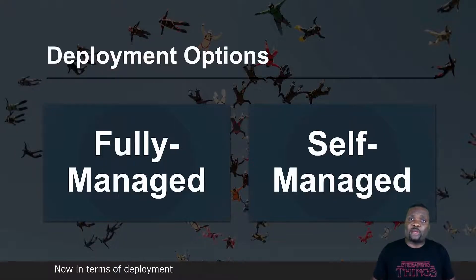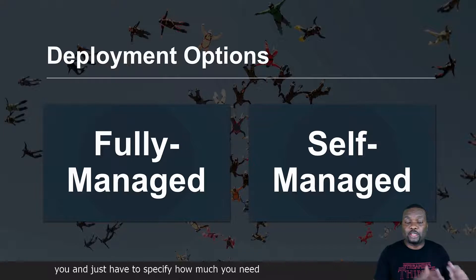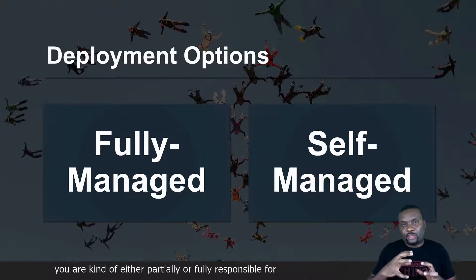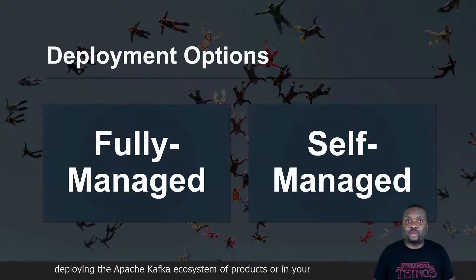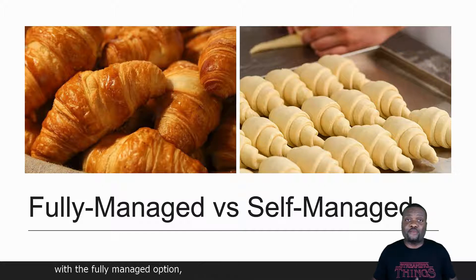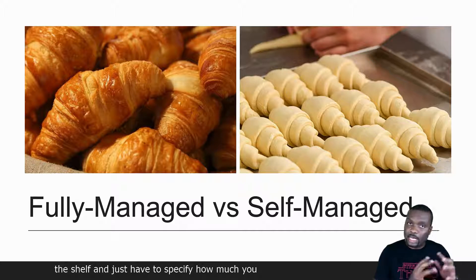Now in terms of deployment options, we have two main options. The first one is fully managed, where either Microsoft Azure or a partner like Confluent is fully managing everything for you, and you just have to specify how much you need and for how long, then you deploy it and you're ready to go right away. We also have the self-managed option where you are either partially or fully responsible for deploying the Apache Kafka ecosystem of products in your environment on Microsoft Azure.